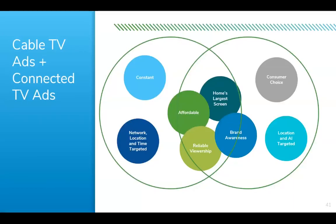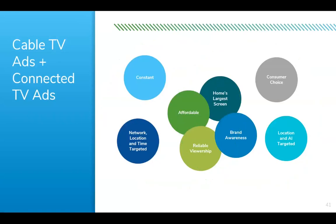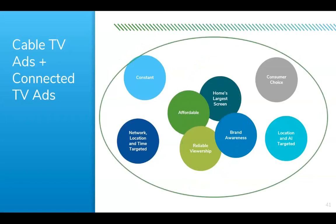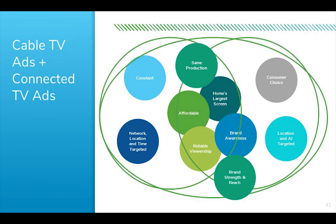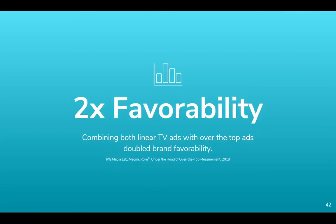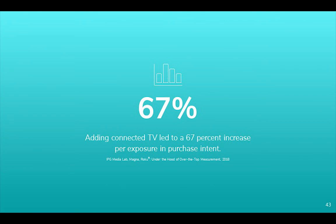Now let's look at the two of them side by side. It's most important to look at the two platforms working together so you can get all of the benefits. When connected TV, cable TV, and even pre-roll online ads work together, you're repurposing slightly different versions for each platform and getting more bang for your buck — plus you're getting additional cross-platform message reinforcement and broader reach. The Video Advertising Bureau found that combining both linear TV ads with over-the-top ads doubled brand favorability. And the IPG Media Lab found that adding connected TV led to a 67% increase in purchase intent per ad exposure. Basically, people are more likely to like your brand and buy from your brand with connected TV ads in the mix.